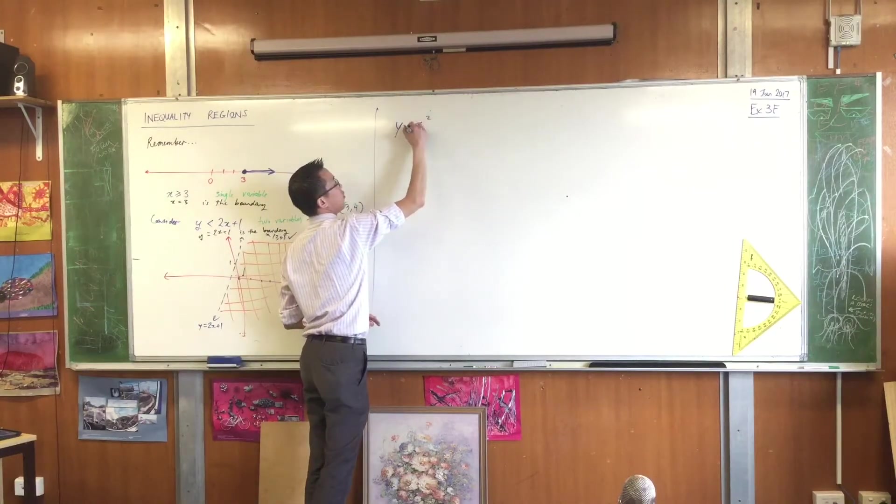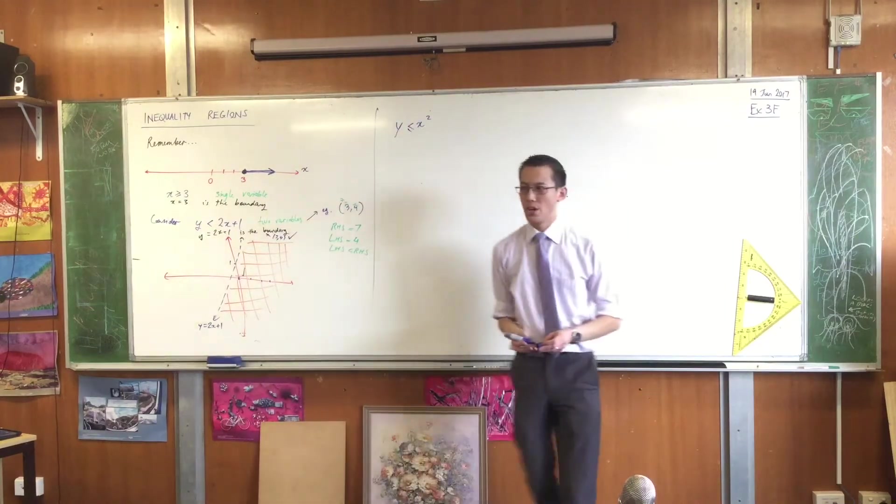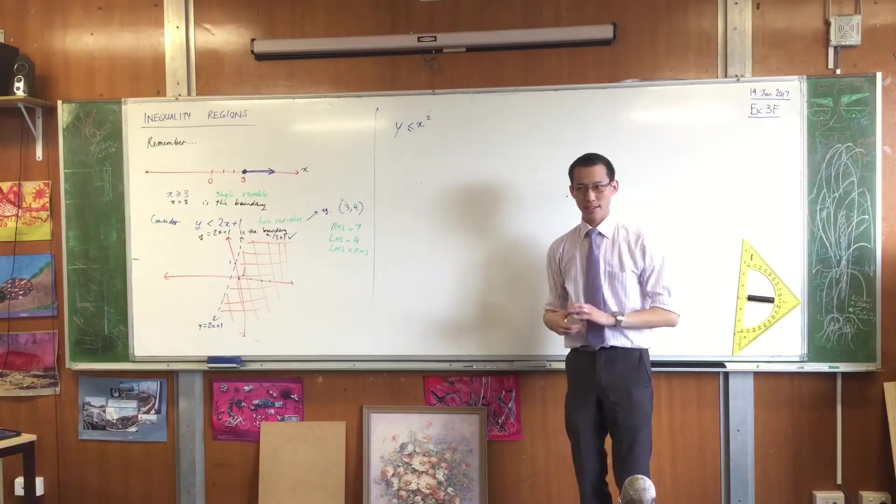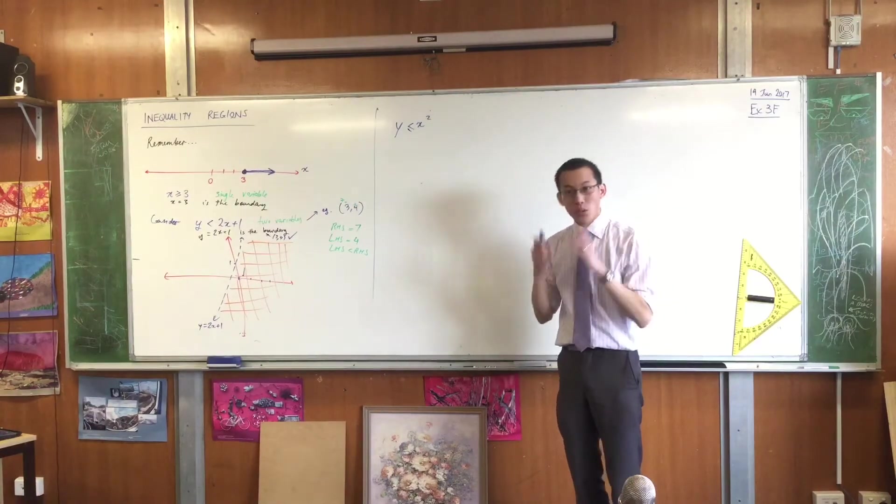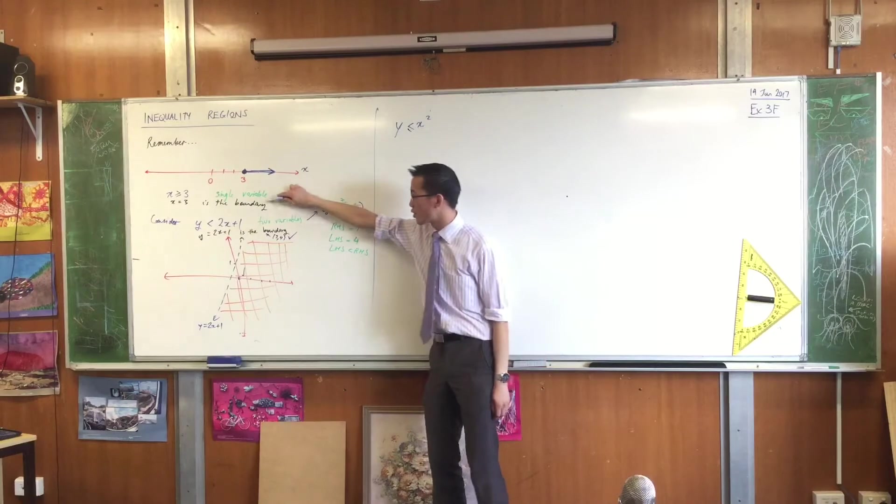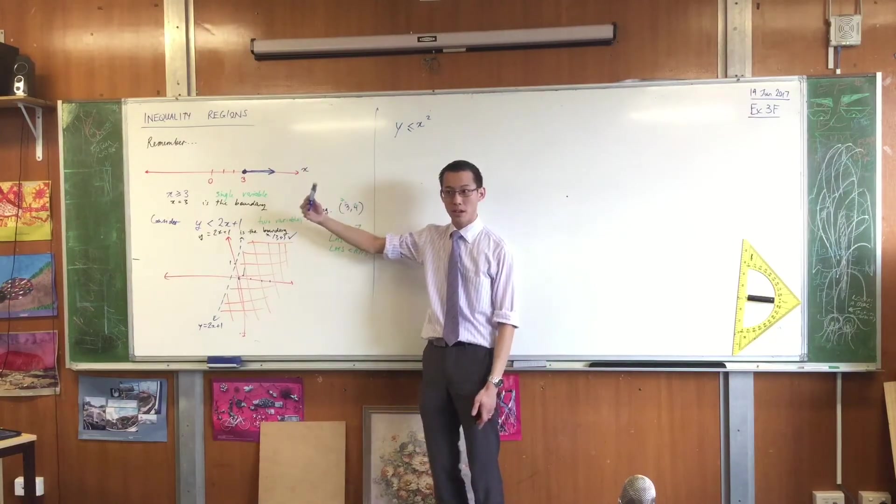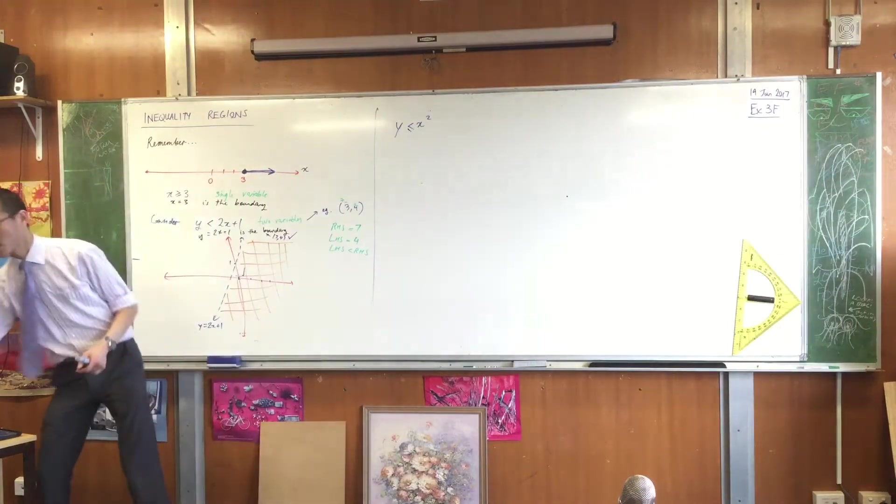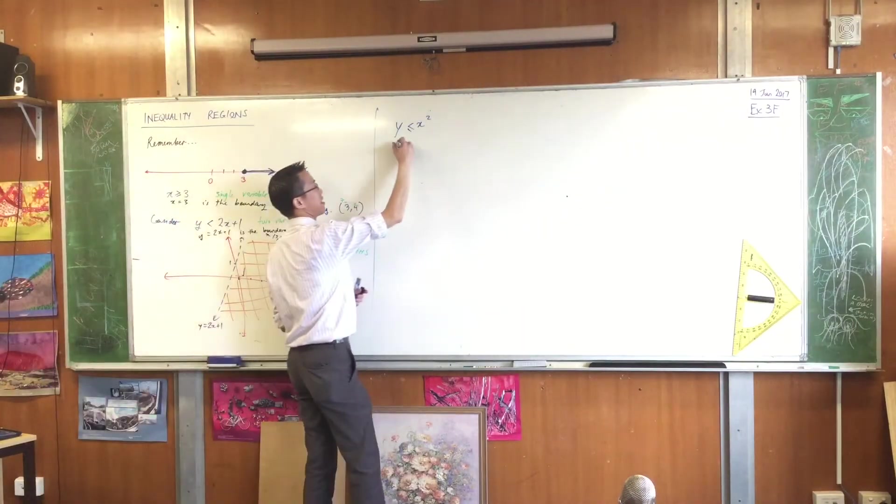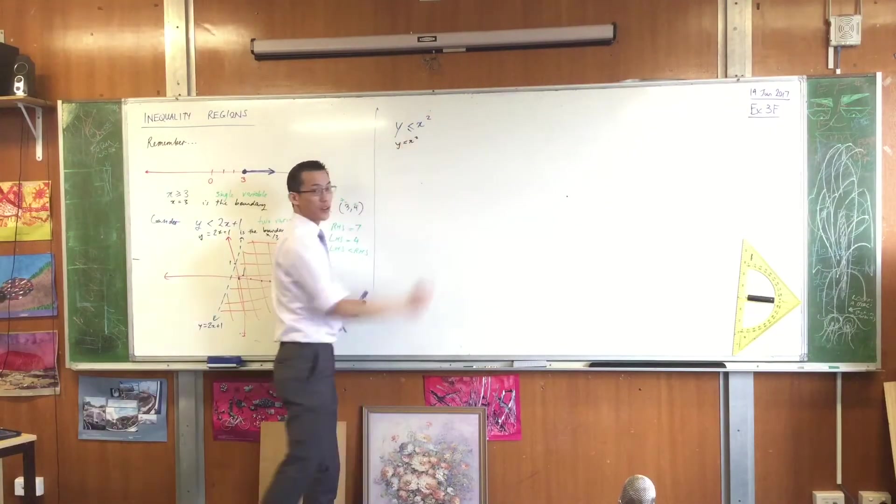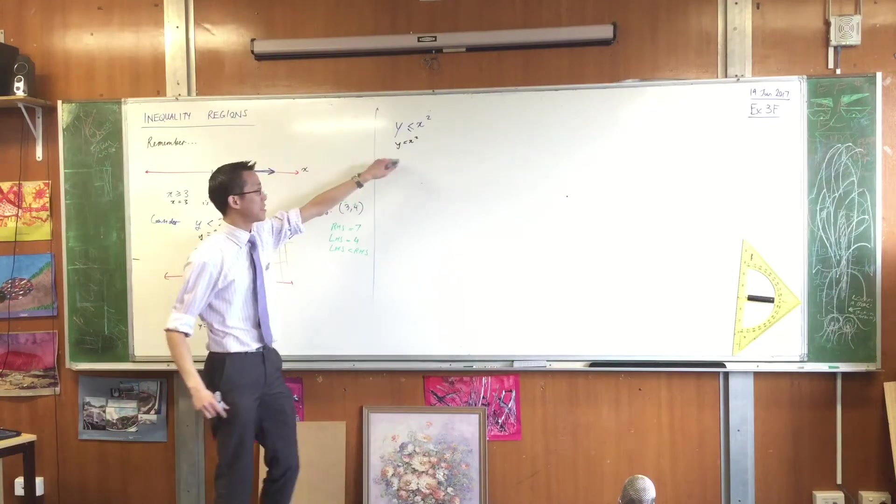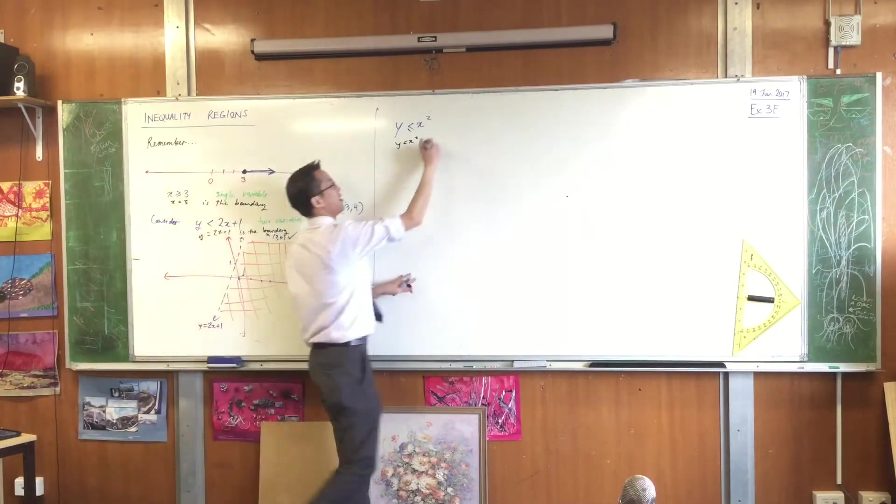y is less than or equal to x squared. What would this look like? Well the first thing we know is, just like I've been showing this pattern here, that y equals x squared will be the boundary. That's so important I want you to write that down. It's that concept that you can find the boundary of inequality by setting it to be an equation. This is the boundary.